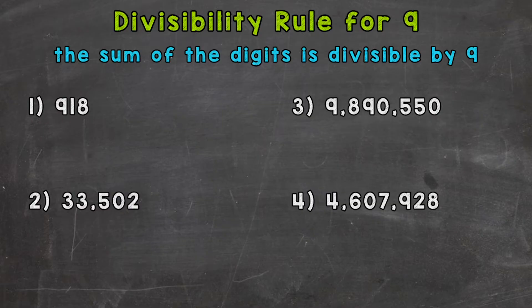So for number 1, we have 918. Let's find the sum of the digits. So 9 plus 1 plus 8. 9 plus 1 is 10, plus 8 is 18. So that's our sum.